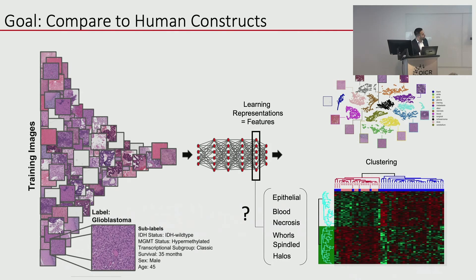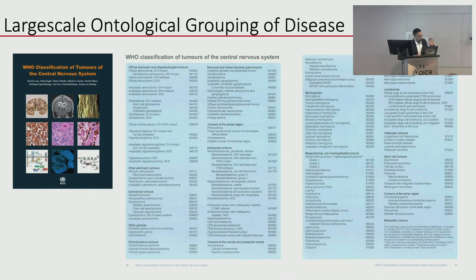We then moved to a discrete way to classify data in an unsupervised manner — clustering. We wanted to see if we can cluster different tumor types, using computer-optimized features similar to gene expression values, and correlate those features with human-understandable morphological features. To do this we needed to move away from 13 classes to something much larger.